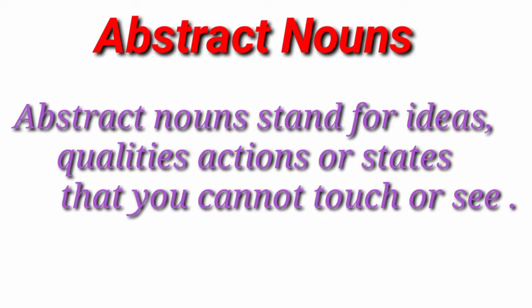What is the abstract noun? Abstract nouns stand for ideas, qualities, actions or states that you cannot see or touch. It means that it is a word which stands for some state, quality, feeling or action — things which have no physical form. It cannot be seen or touched but only felt.